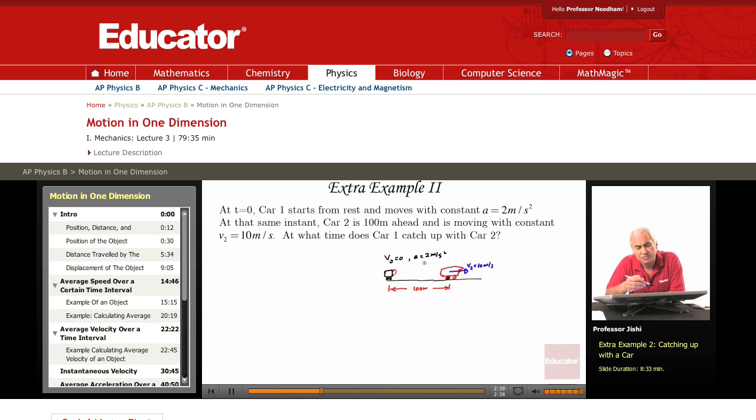After 1 second, its velocity will be 2 meters per second. At t equals 2 seconds, it will be 4 meters per second. At t equals 3, it will be 6. At t equals 10 seconds, it will have a velocity of 20 meters per second.